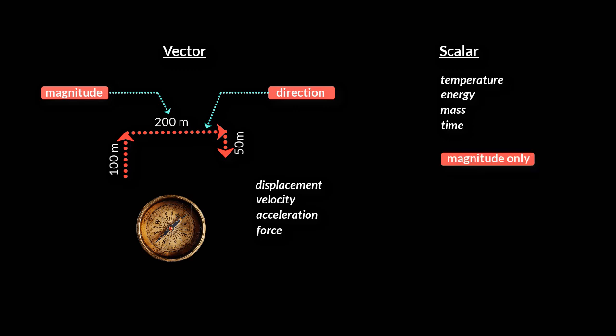For example, you say the temperature is 50 degrees centigrade, but you would never say the temperature is 50 degrees centigrade in northeast direction. Likewise, for mass, you say the mass is 80 kilograms without the need to specify the direction.